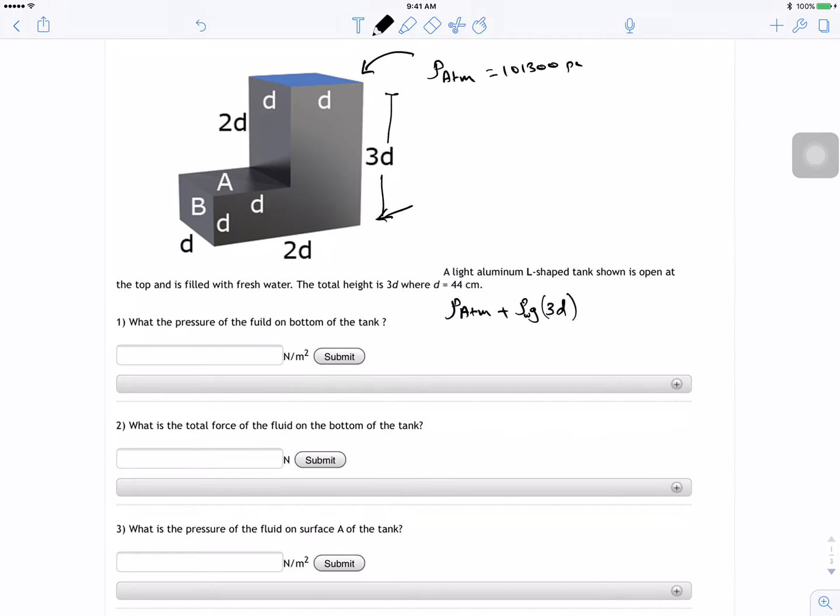So we have 101,300 plus 1000 times 9.81 times 3 times 0.44. Now for this guy I got 114249.2 N per meter squared.